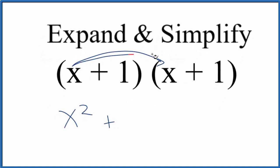Then we'll multiply it by this outside term here, this 1. So x times 1, that's just x.